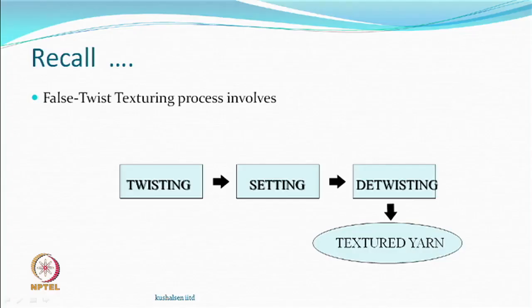We know there are three methods, but whenever you want to assume anything, think that we are talking about false twist texturing — not helenka or turbo duo. This is more commercially successful and being used. If you recall, it will also involve the same thing: twisting, setting, de-twisting, and the textured yarn — and that is what we have understood today, how the textured yarn is produced.